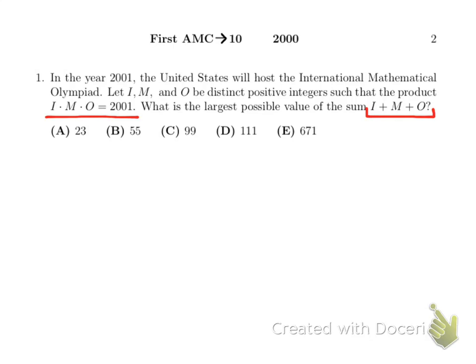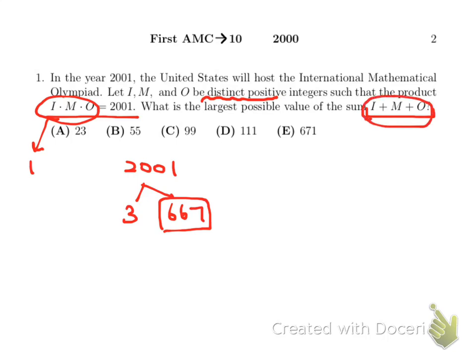In order for us to make the sum to be the greatest, these numbers have to be greatest apart, meaning any one of them can be as close to 2001 as possible. Since they are distinct positive integers, one of the values can be equal to 1. We can use the factor tree here. So 2001, when you break it down, we get 3 and 667. So in this way, we increase one of the values as much as possible, so that we can have the sum be the greatest as possible. So when you add up all these three values, we end up getting 671.